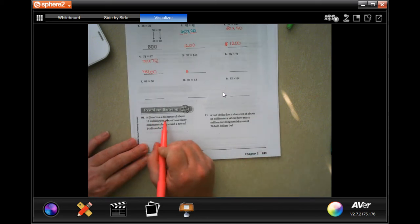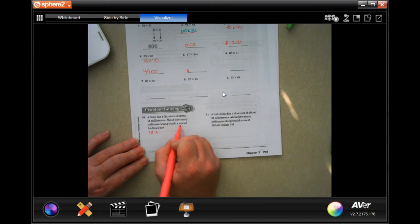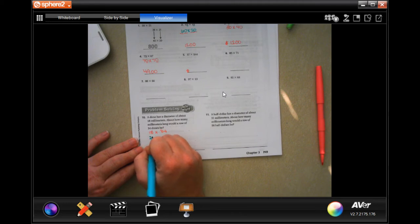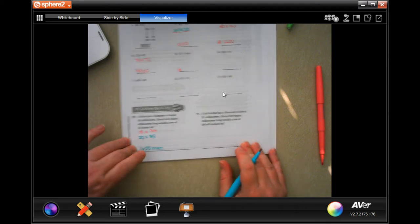A dime has a diameter of about 18 millimeters. About how many millimeters long would a row of 34 dimes be? Well, 18 is going to round to 20 and 34 is going to round to 30. Two times three is six and zero and zero. 600. And we're going to put mm for millimeters.